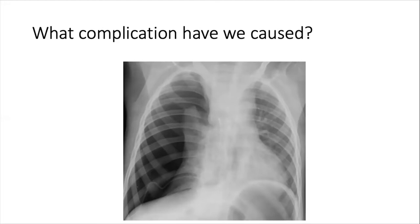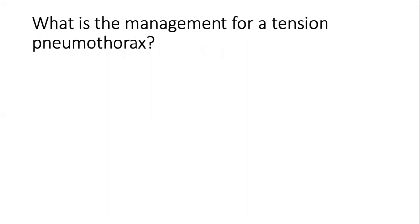Unfortunately what we've caused is a tension pneumothorax. You can see that the right lung is collapsed and there is shift of the mediastinum towards the left. The management for a tension pneumothorax is a large bore cannula in the second intercostal space mid-clavicular line attached to an underwater seal. This should then be substituted for a formal chest drain, and you can see in this chest x-ray that we have put in a chest drain and cured his pneumothorax.